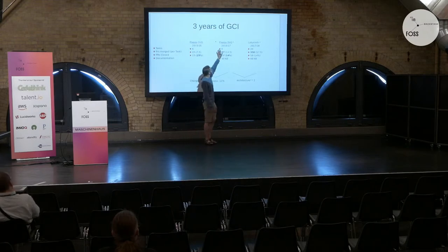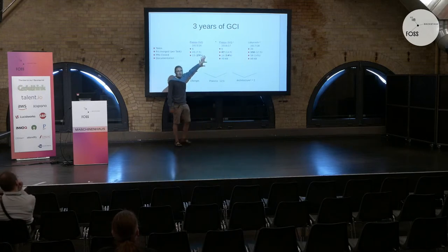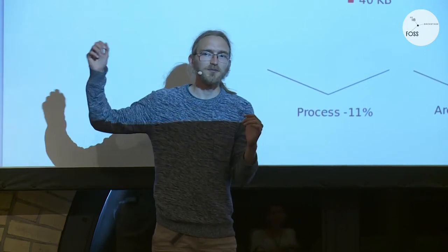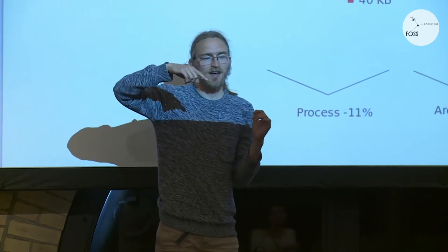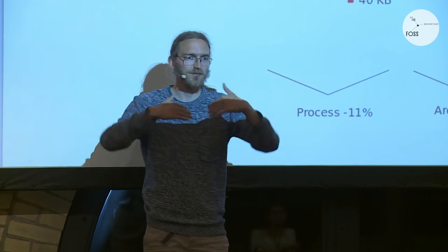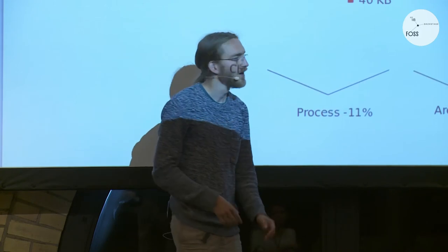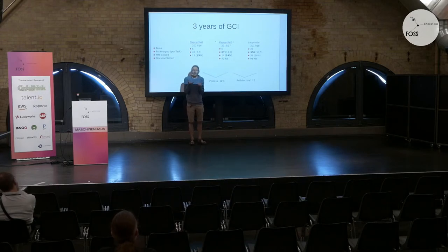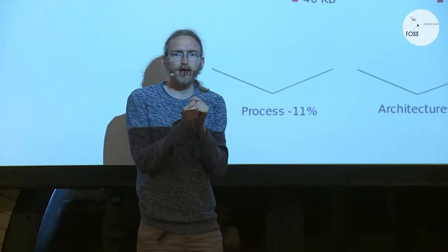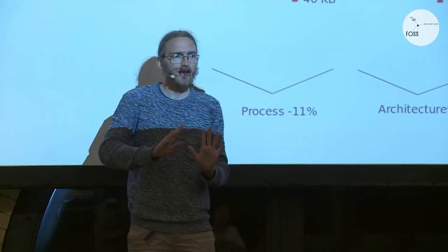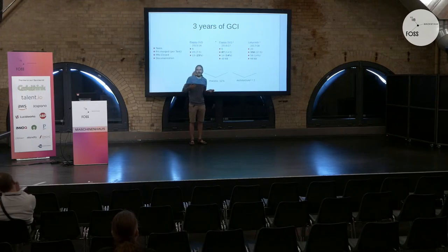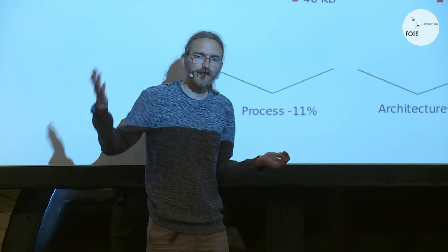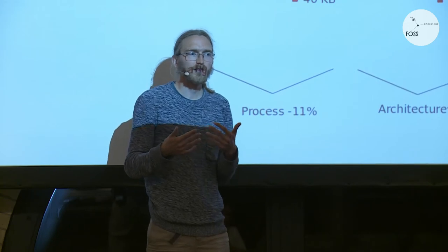We also changed the architecture when we moved to the Labyrinth game. In Flappy SVG, there is one single SVG file for everything edited with Inkscape — whenever somebody makes a change, metadata changes and you get merge conflicts. If two people contribute in parallel you almost certainly get merge conflicts. By changing the process we get more merges. The architecture idea was: which game can we create where students can add characters, floors, music, walls, and levels again and again and again — where every single part can be edited many, many ways.